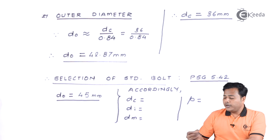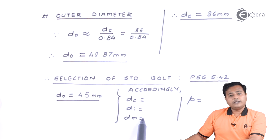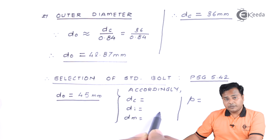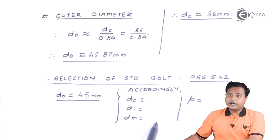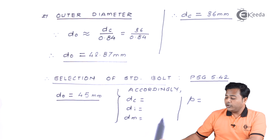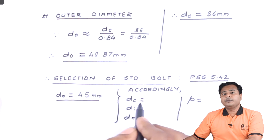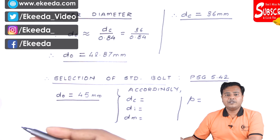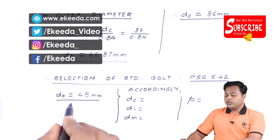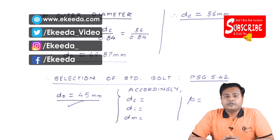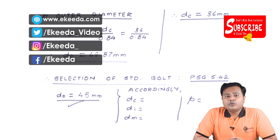As a secondary part of the solution, we can also express the core diameter, internal diameter, main diameter, and pitch of the selected bolt — though these are secondary parameters. With this, the design is complete and we have found the required bolt dimension. Thank you so much for watching. If you liked this video, please subscribe to Ikeda.